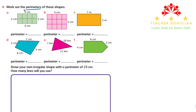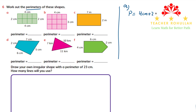The first shape, which is shape A, is a rectangle. This rectangle has a length of four centimeters and a width of two centimeters. So to find out the perimeter of this shape, we have to add them one by one. The perimeter for shape A is equal to four centimeters plus two centimeters plus four centimeters plus two centimeters. Four plus two is six, six plus four is ten, and ten plus two is twelve.